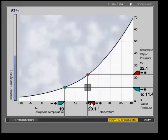So in this case, I've got 20 degrees air temperature and 10 degrees dew point temperature. And so the actual vapor pressure in the air is 11.4 millibars. The saturation vapor pressure is 21.9 millibars. And so if I take the ratio of those two, I would get 52% relative humidity.